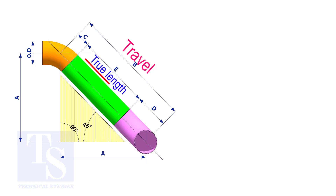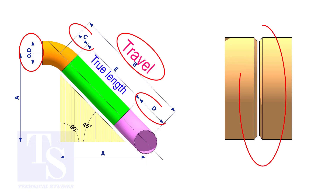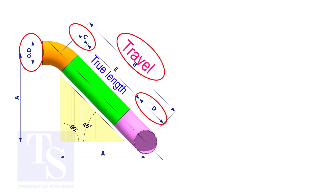To calculate the true length or the cut length, we need to know the travel length, the diameter of the pipe, the joint gap, and the elbow center. The elbow center is sometimes called the takeoff length.